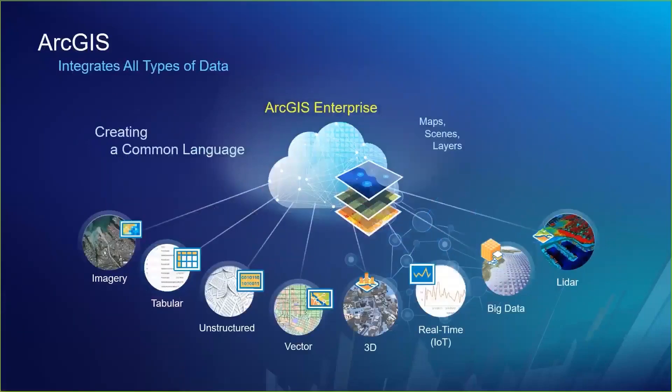Drilling down into the data aspect, ArcGIS organizes and supports various types of data models ranging from vector, raster, imagery, LiDAR, IoT, 3D, big data, and more. It abstracts these data into a common language of maps, scenes, and layers, so that everyone can understand it easily and it helps for quick decision-making. This makes ArcGIS a universal technology, with ArcGIS Enterprise serving as a collaborative GIS platform for organizational workflows.